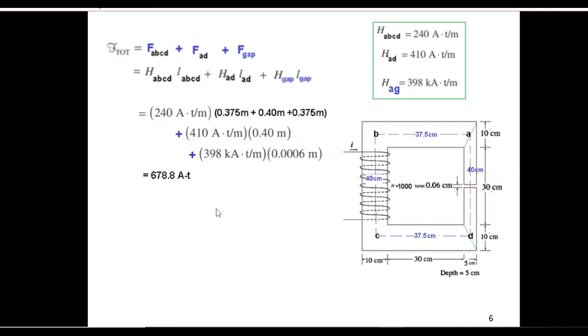And now that we have the total MMF, we can find the current by using this formula. Turns are 1000 turns, so the answer will be 0.678 amperes. So this is the answer of the first part.